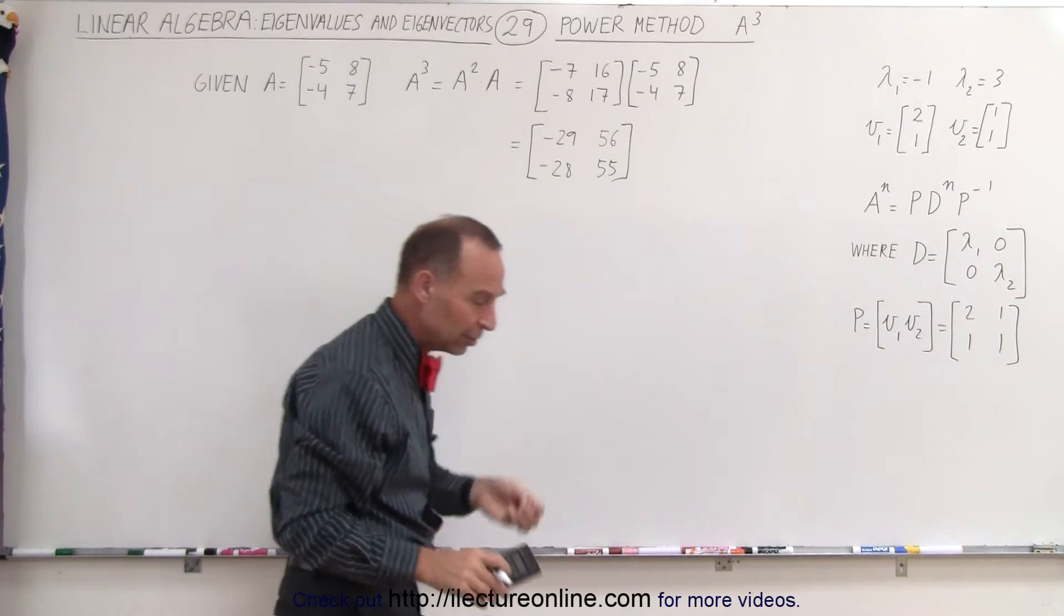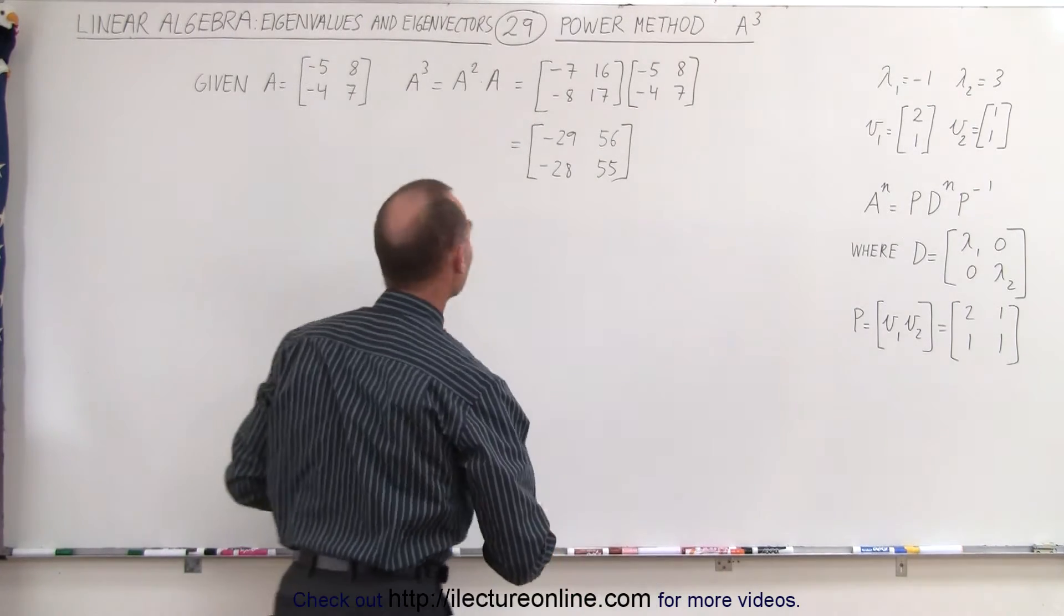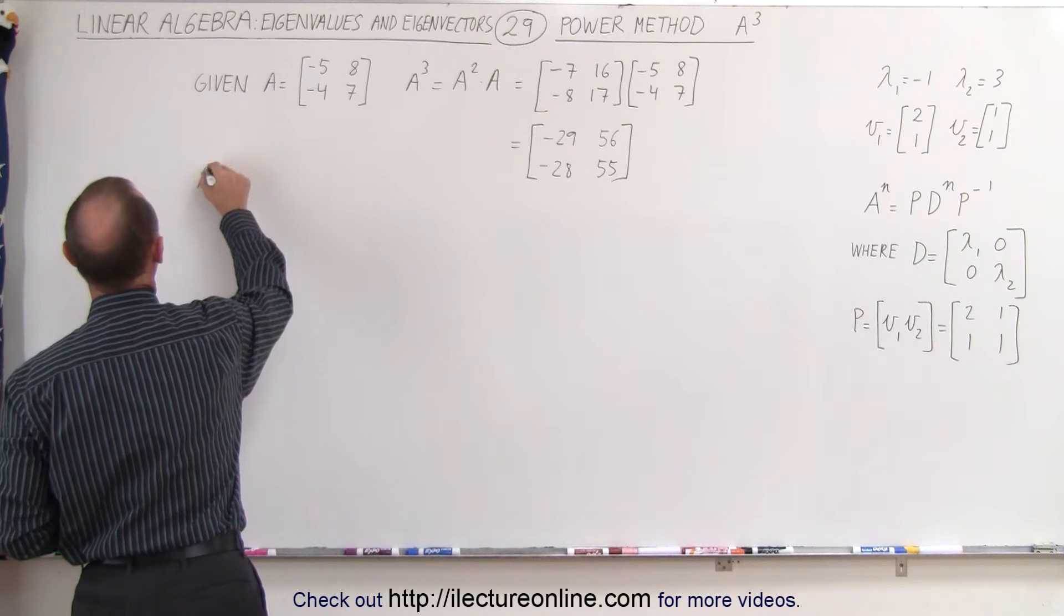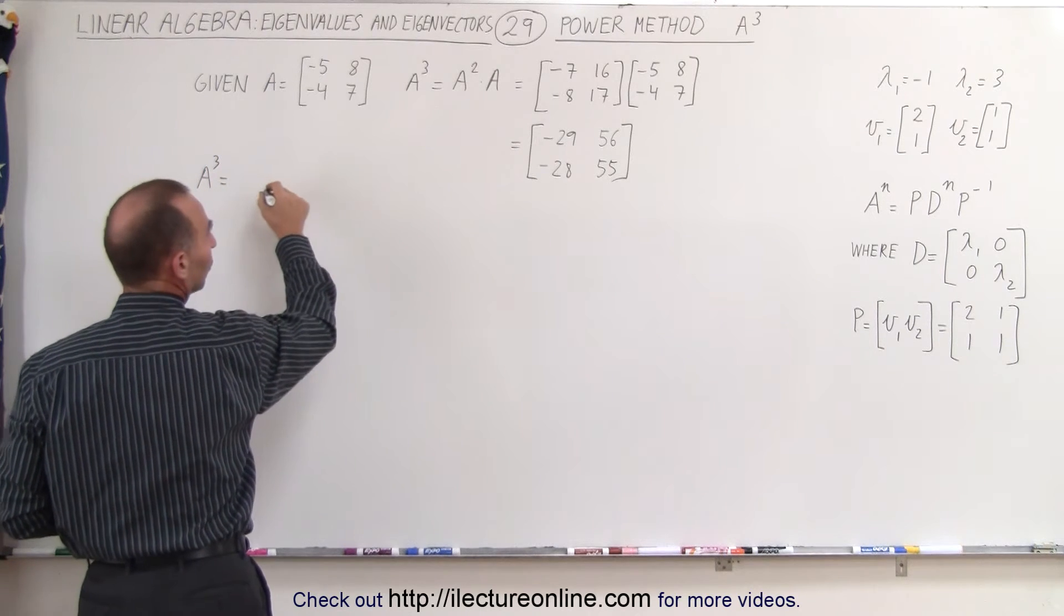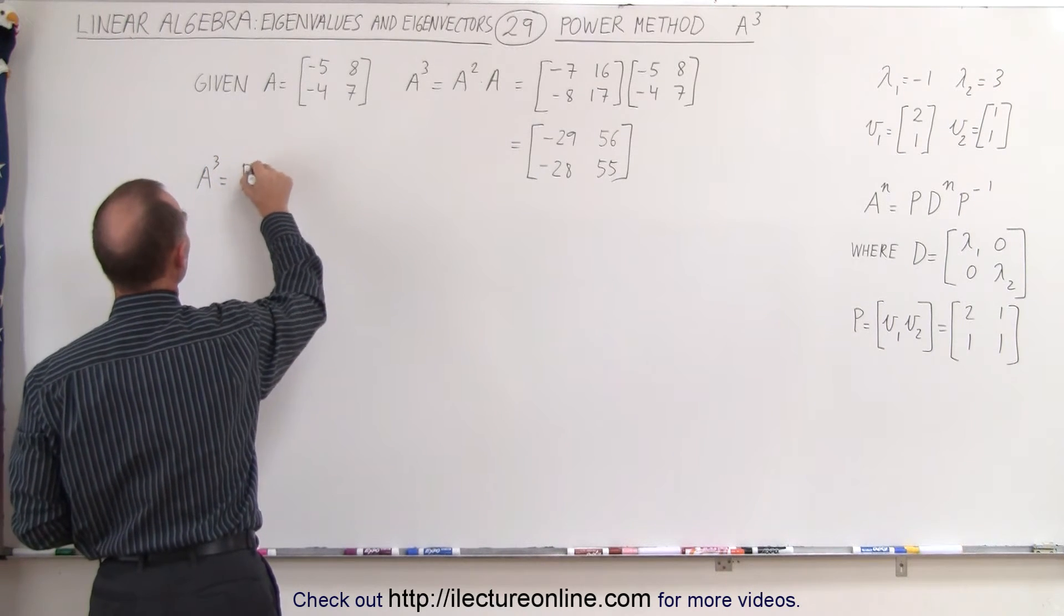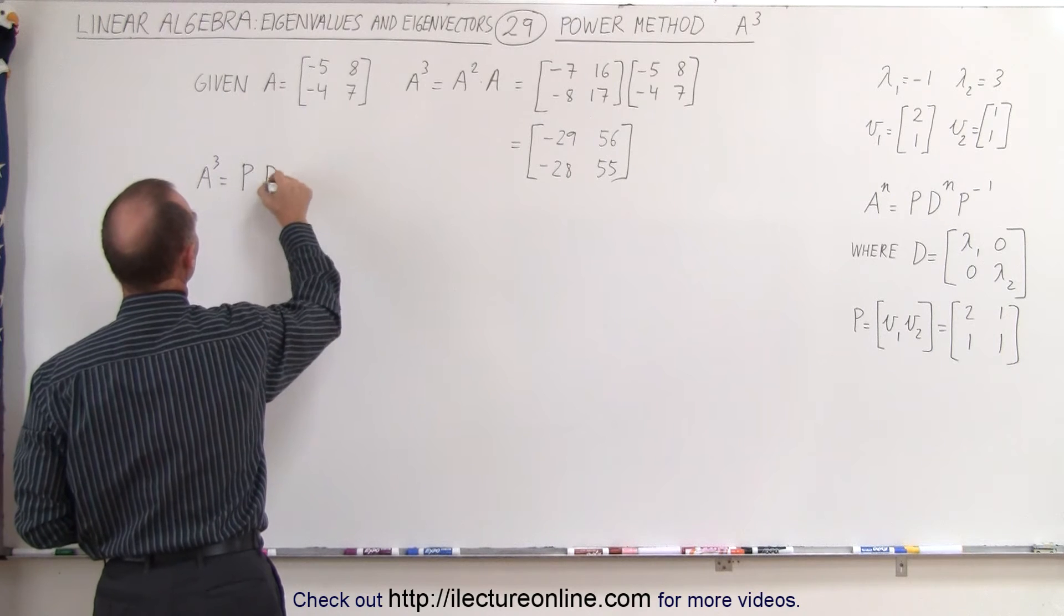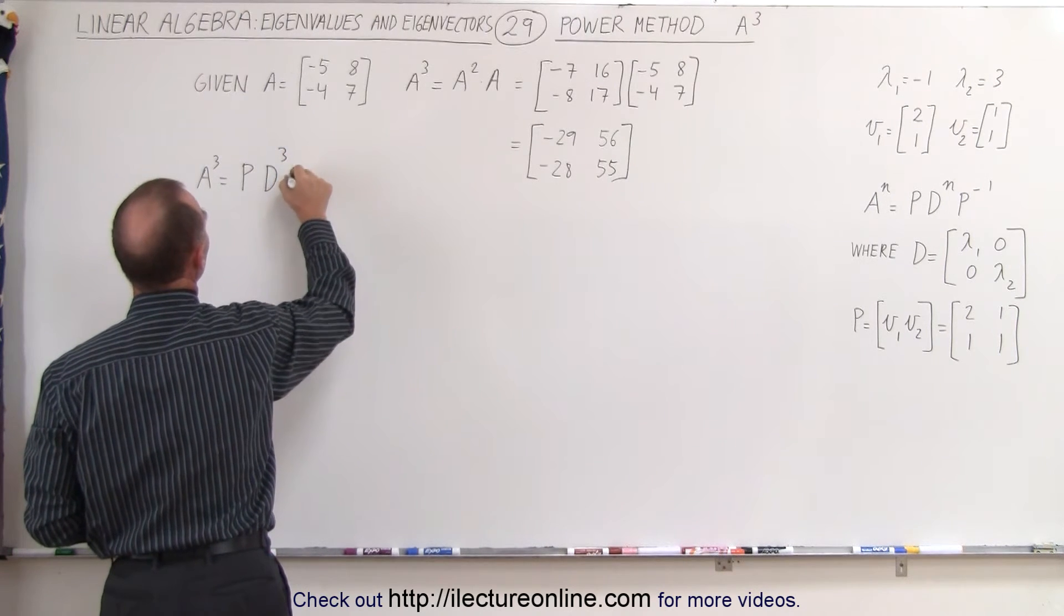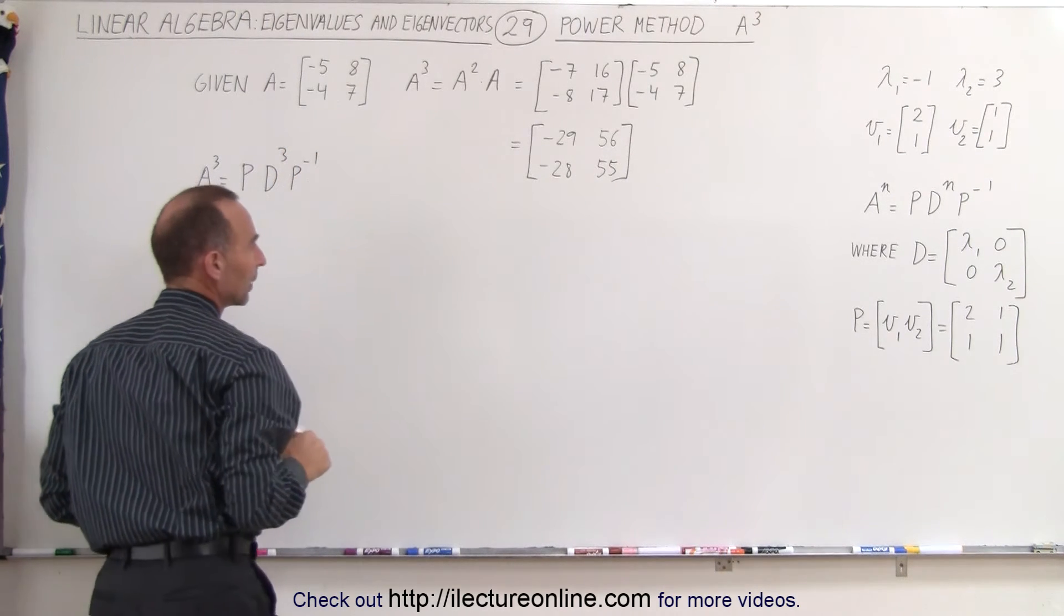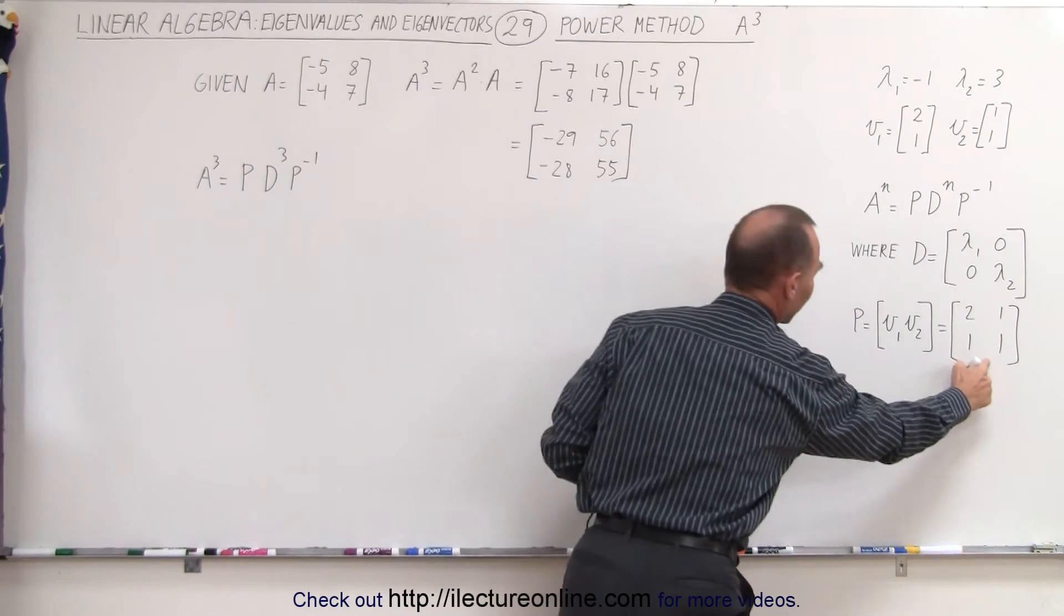The new way, using the power method, we can say that A to the third power is equal to the P matrix times the diagonalized matrix cubed times the inverse of P. Of course, P we already have, that's this matrix right here.